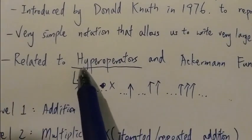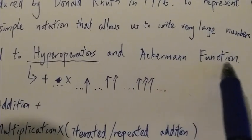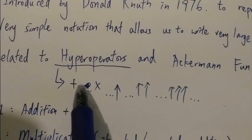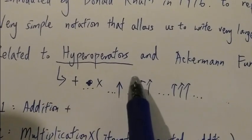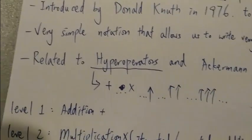It is a very simple notation, but yet it allows us to write out numbers that are usually very difficult to write out. It is related to hyperoperators and, to some degree, the Ackermann function. Hyperoperators, for example, are addition, multiplication, exponentiation, and then tetration, pentation, et cetera.